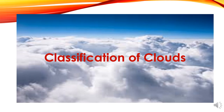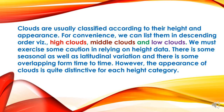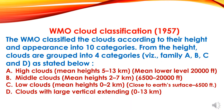Now we will go through the classification of clouds. Clouds are usually classified according to their height and appearance. For convenience, we can list them in descending order: high clouds, middle clouds, and low clouds. We must exercise some caution in relying on height data, as there is some seasonal as well as latitude variation and some overlapping from time to time. However, the appearance of a cloud is quite distinctive for each height category. Now we will study cloud classification based on WMO — World Meteorological Organization. In 1957, the WMO classified clouds according to their height and appearance into 10 categories.